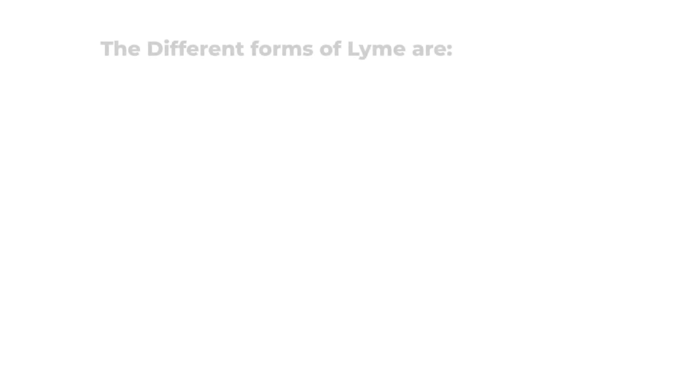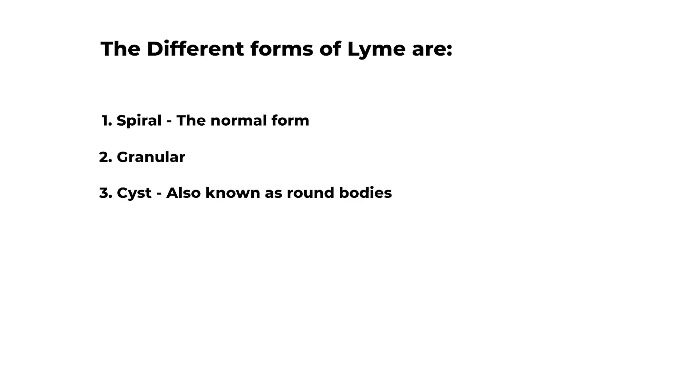There are different forms of Lyme, and they include: spiral, the normal form; granular; cyst, also known as round bodies; colony, which creates biofilms; rolled; and agglomeration of ring-shaped forms.